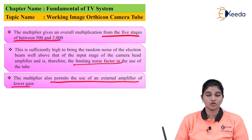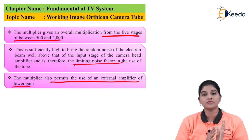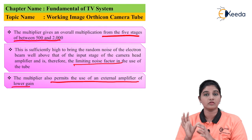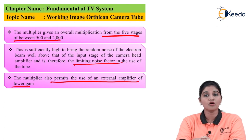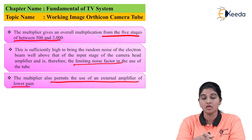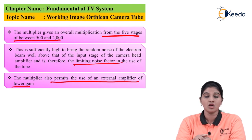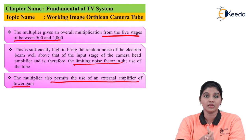The image orthicon tube consists of three sections: the image section for production of the electron beam, the scanning section for deflection and alignment of the beam, and the multiplication section where the actual video signal is produced through multiplication and amplification. The image orthicon camera tube provides high efficiency and a spectral response very close to the human eye. However, it is somewhat bulky compared to Vidicon and plumbicon tubes, has a shorter operating life, and is more costly, though its key advantages are spectral response close to the human eye and high sensitivity to picture information.